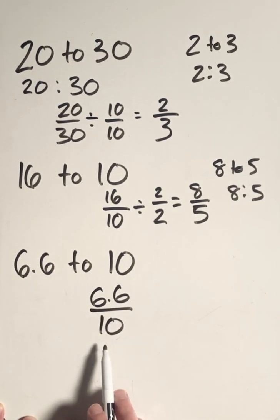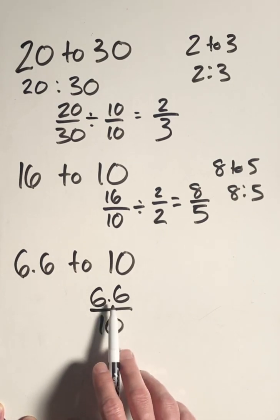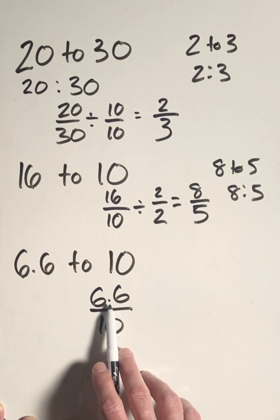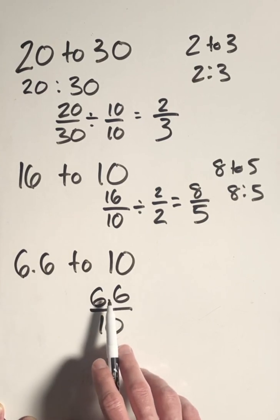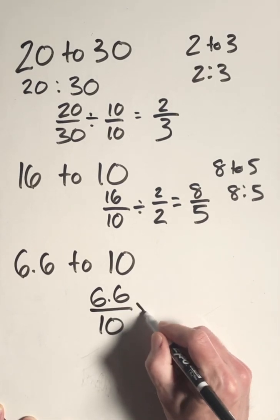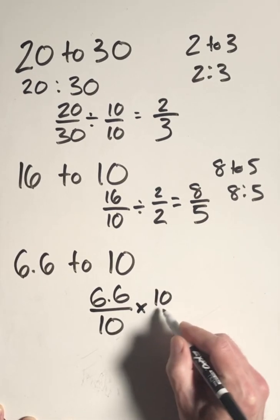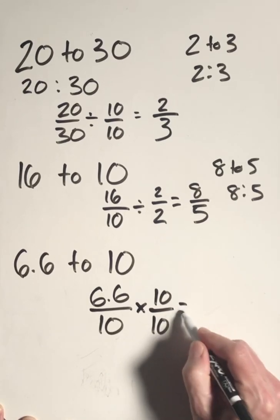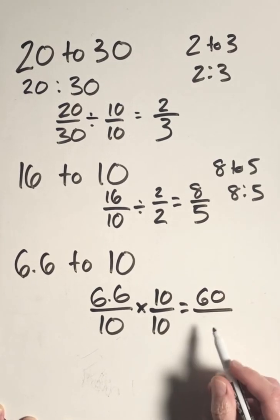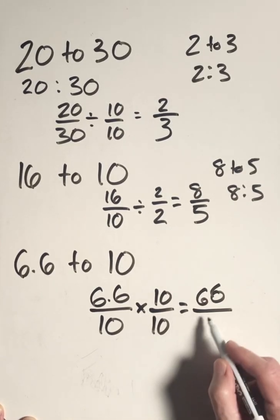Now we don't like to have decimals included in our fraction, so what we'll do is see how many decimal places are to the right of the decimal point and multiply by that power of 10. So if we have one digit to the right of the decimal point, we will multiply by 10^1. This would give me 6.6 times 10, or 66. 10 times 10 is 100.